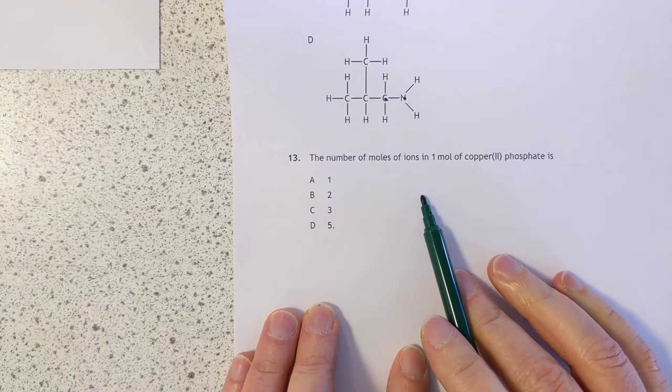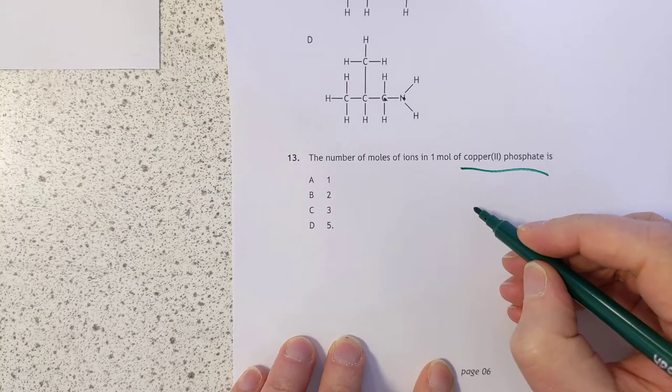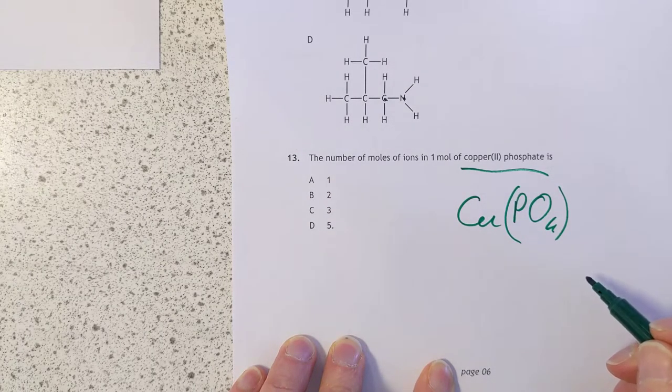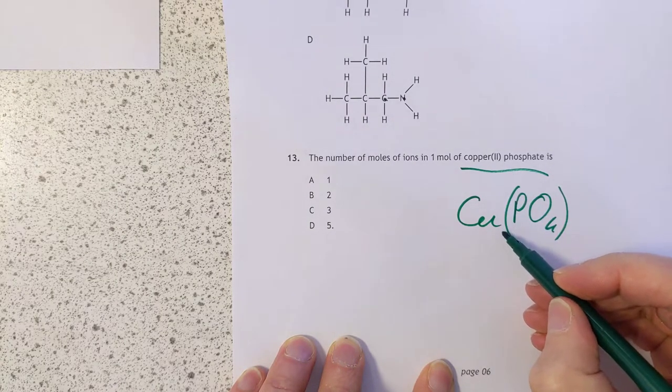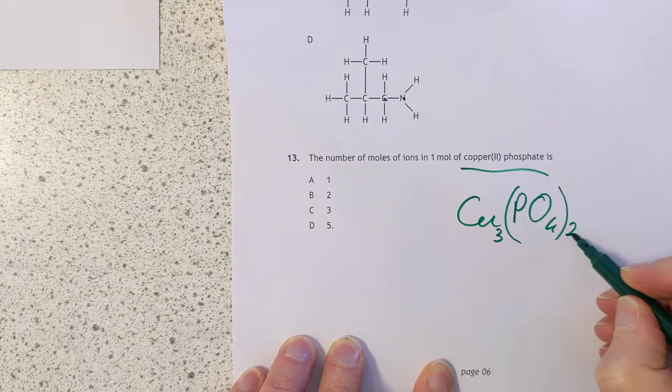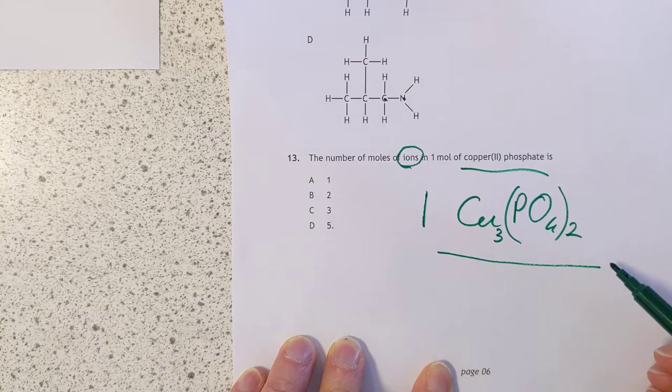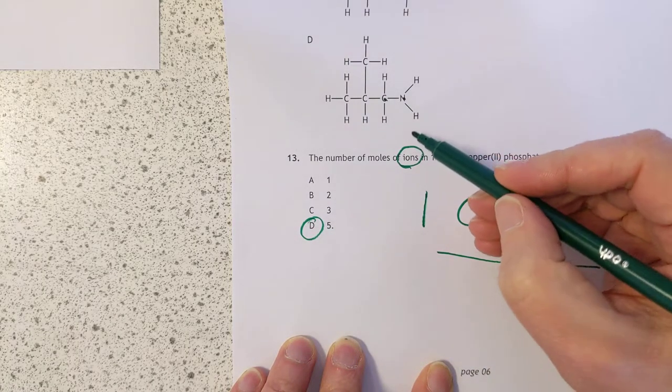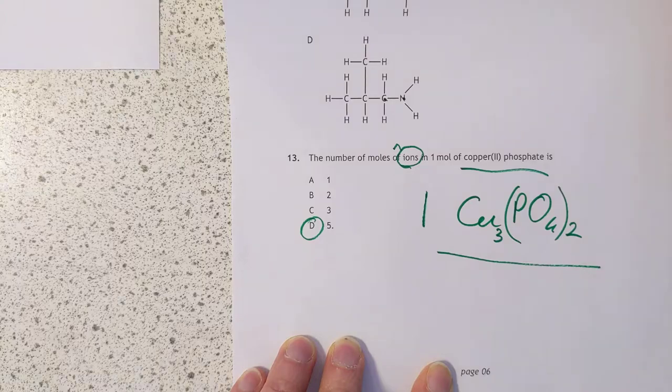Question 13: The number of moles of ions in one mole of copper 2 phosphate. We need the formula first of all. This is hands and fingers time. Copper 2 and phosphate, I have to go and look it up in my data book. It's PO4, valency is 3. And this is a valency of 2. Let's swap these valencies around. You end up with Cu3(PO4)2. For every one copper phosphate, you've got three coppers and two phosphates. So there are five ions in total.